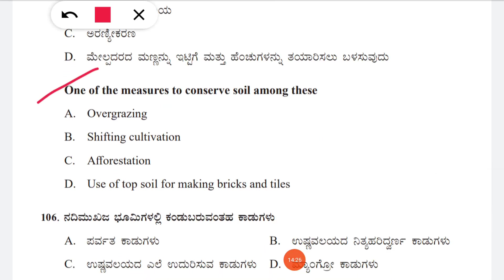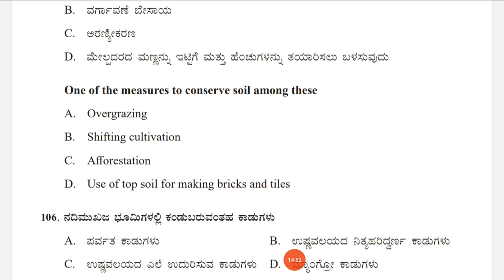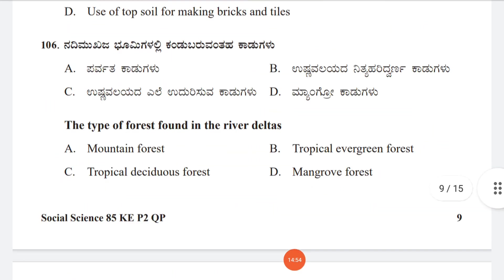Question 105: One of the measures to conserve soil — option A: overgrazing, B: shifting cultivation, C: afforestation, D: use of topsoil for making bricks and tiles. The correct answer is C, afforestation.